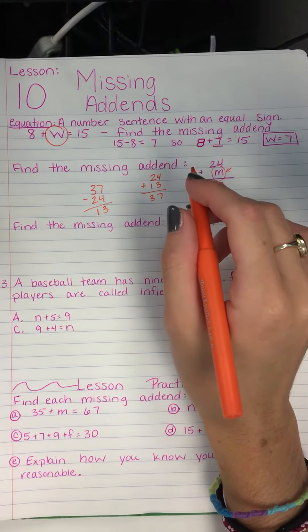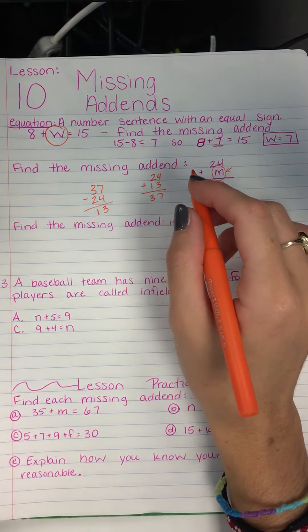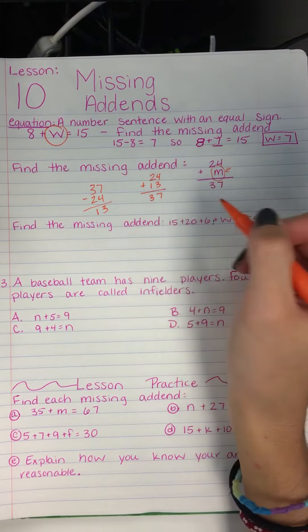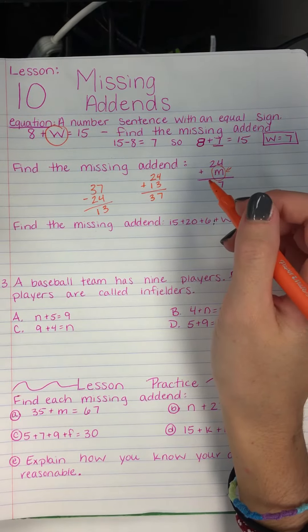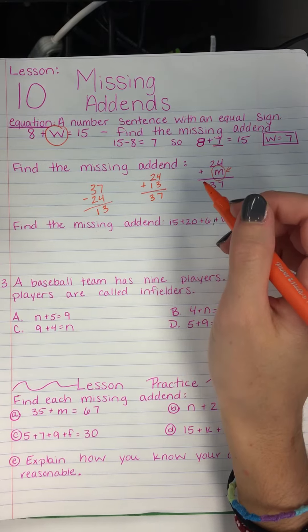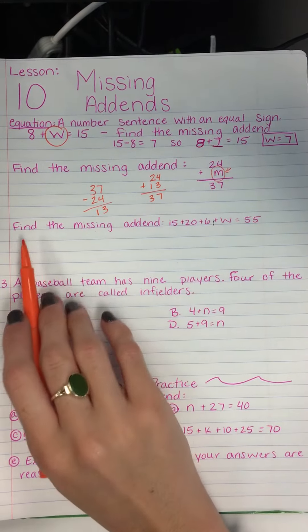So many times I see you guys with just a silly mistake. You would say 38 or 30, you know, you would just do some silly addition problem or subtraction problem wrong. Alright, always double check.